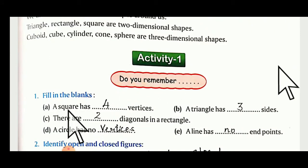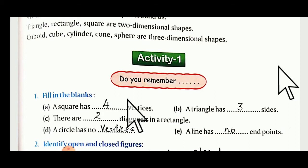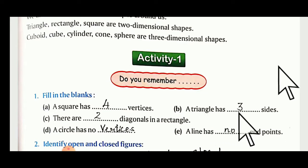Fill in the blanks. A square has how many vertices? Four — four joining points, because a square has four sides. A triangle has three sides.